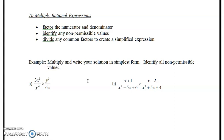Then you can identify any non-permissible values, and then divide any common factors to create a simplified expression. Identifying non-permissible values is something we want to start doing because we're going to need that later on when we start doing the equations in the last section. It's something that's good to get in the habit of now. It has no reflection on how we're going to simplify the expression, but it's something we're going to use a little later on.